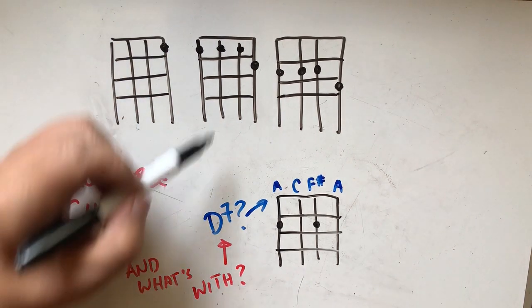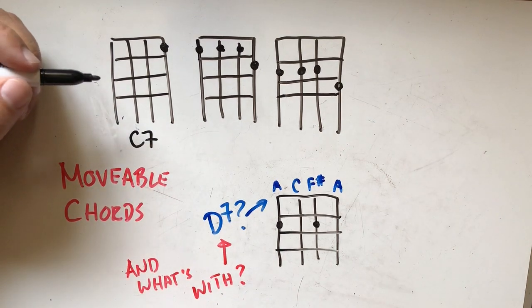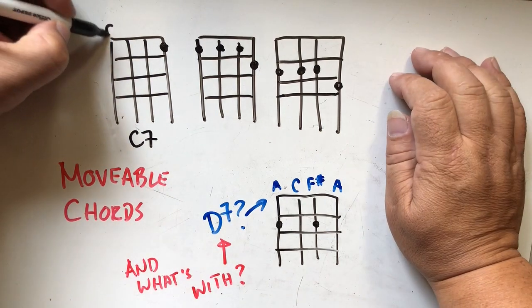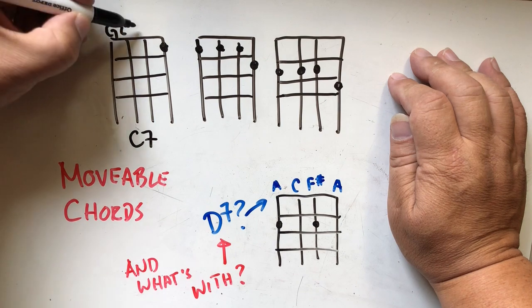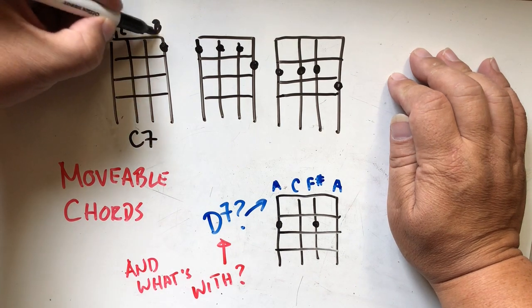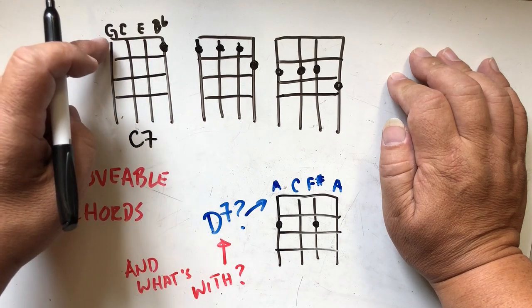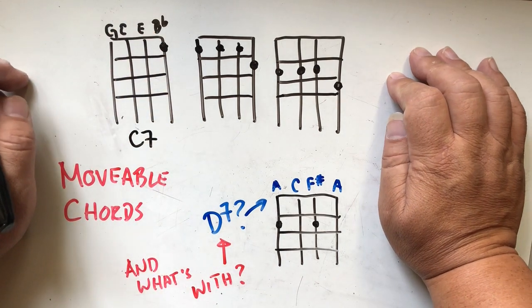Let's have a look at this right here, this is a C7 chord. That's a G, that's a C, that's an E, and that's a B flat. A C7 chord is a major triad C E G and a whole step below the C for the seventh, which is B flat.